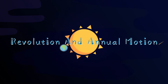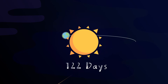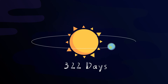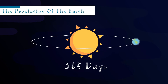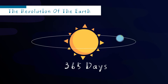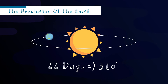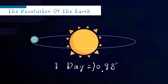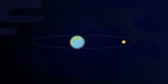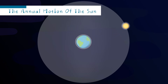Revolution and Annual Motion. The vast earth we live on makes a full circle around the sun from west to east in one year. This is called the revolution of the earth. There are 365 days in a year, and a full circle is 360 degrees, which means that the earth only moves around the sun one degree per day. From our perspective on earth, it looks like the sun is moving. The apparent motion of the sun, as it appears to move one degree from west to east due to the revolution of the earth, is called the annual motion of the sun.